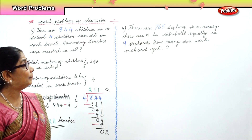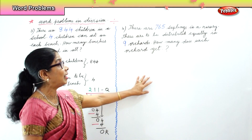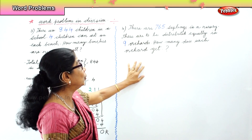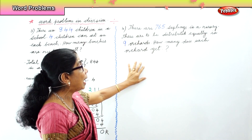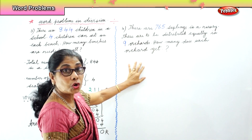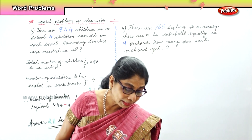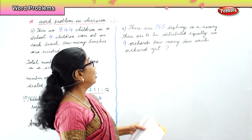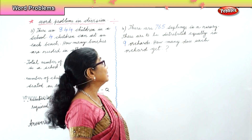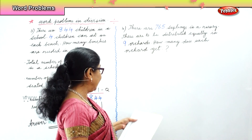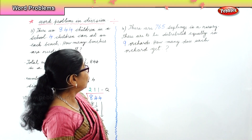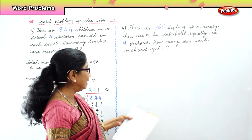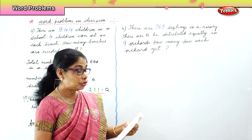Now let's look at the next sum. There are seven hundred and sixty-five saplings in a nursery. These are to be distributed equally in nine orchards. How many does each orchard get? What will be the statement? Total number of saplings in the nursery: seven hundred and sixty-five. Number of orchards: nine. Therefore, number of saplings each orchard gets.